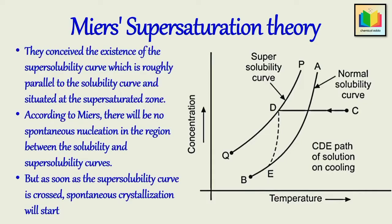In the figure, we can see the curve AB is the solubility curve and the curve PQ is the super solubility curve, where curve AB represents the maximum concentration of solutions which can be achieved by bringing solid solute into equilibrium with a liquid solvent. If a solution having the composition and temperature indicated by point C is cooled in the direction shown by an arrow, it first crosses the solubility curve AB.